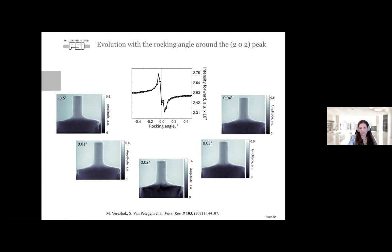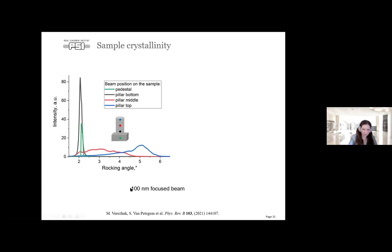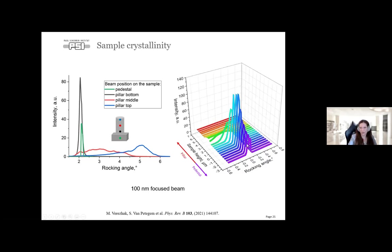Here are four rocking curves acquired with a focused beam at four different heights of the pillar. At the pedestal the green rocking curve shows a very elastic, clean Bragg peak—completely expected. At the bottom part, the black curve is slightly shifted and widened, already showing some strain. At the middle and top part, we cannot recover a Bragg peak at all because there is heavy evolution of the Bragg peak, and as soon as we reach the upper half of the pillar we are basically out of Bragg.